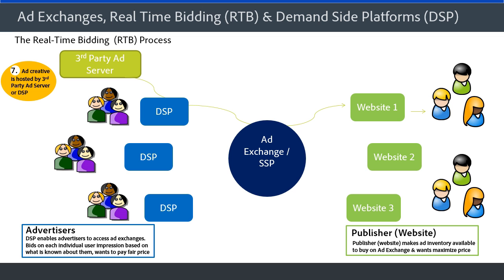Many advertisers use a third-party ad server with the DSP, so that creative can be hosted with a third-party ad server. The DSP makes the decision on where the ad is shown and does the optimization of the display campaigns for the advertiser.